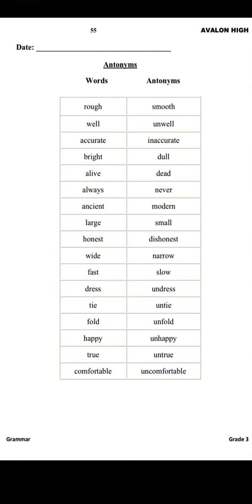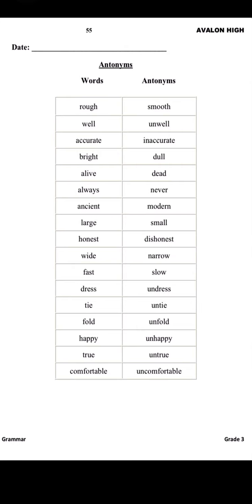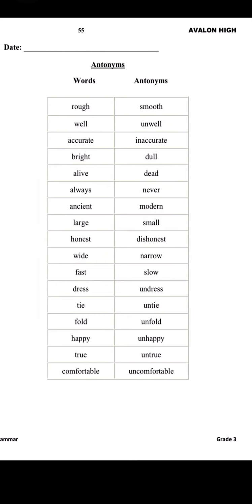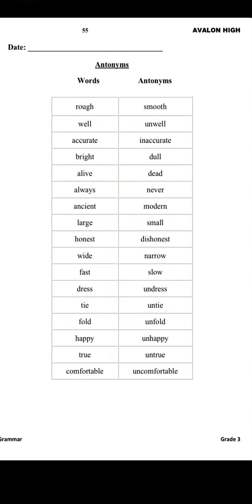You have it on page number 55. You will open your workbook and see antonyms. What is the meaning of antonyms? Antonyms means words having opposite meaning. Kisi bhi word ka opposite ya ulta matlab jo hota hai usse antonyms kehte hain. For example: rough, smooth.